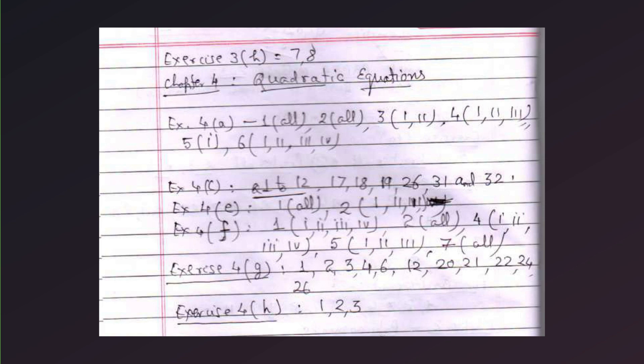Chapter 4, quadratic equation. Question number 4A, 1 all, 2 all, 3 numbers 1 and 2, 4 numbers 1, 2, and 3. Question 5 number 1, 6 numbers 1, 2, 3, and 4. Exercise 4C, question 1, 2, 12, 17, 18, 19, 26, 31, 32. Exercise 4E, 1 all, question number 1, 2, 3.